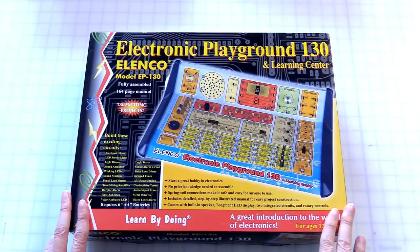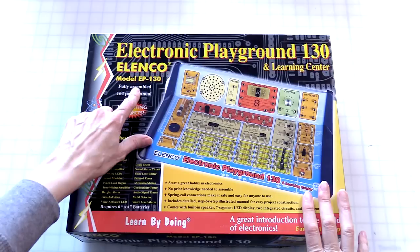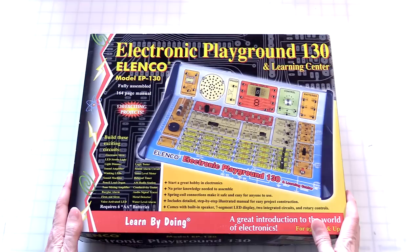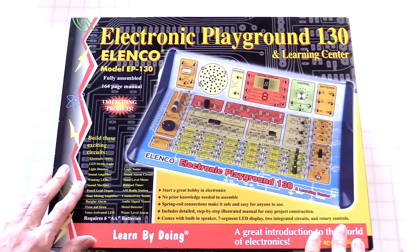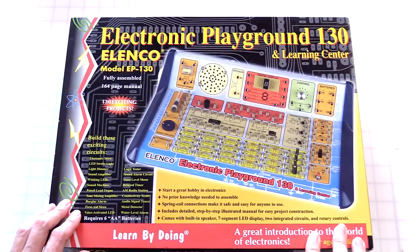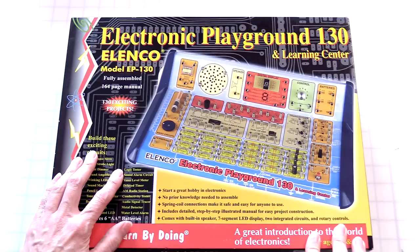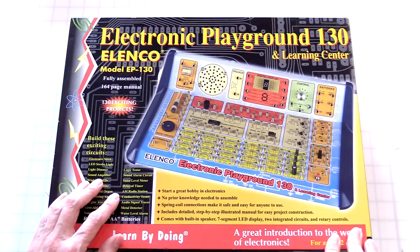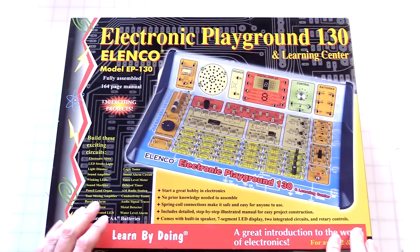All right, here's the Elenco, electronic playground 130, model EP 130, fully assembled, 164-page manual, 130 exciting projects. So you can build electronic siren, LED strobe light, light dimmer, sound amplifier, winking LEDs, sound machine, pencil lead organ—that's interesting—tone mixing amplifier, burglar alarm, first aid siren, voice activated LED, logic tester, sound alarm circuit, voice level meter, delayed timer, AM radio station, conductivity tester, audio signal tracer, metal detector, water level alarm. Requires six double A batteries, I guess no nine volt in this.